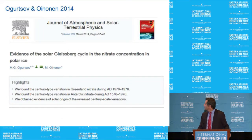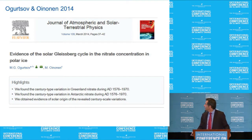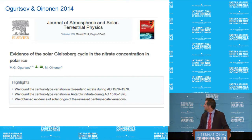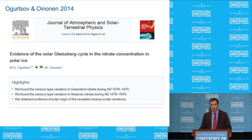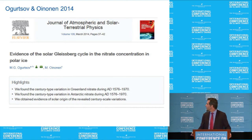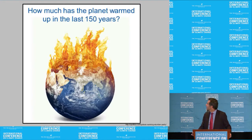Ogotsov and Ojanen, March 2014: the Gleisberg cycle — that 90-year cycle — was found in nitrate concentration in polar ice. Interesting. How did the sun do all of this when, according to the IPCC, it has really no climate power?